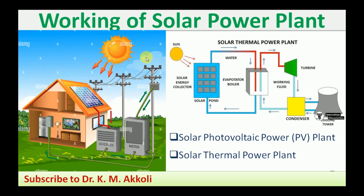We will discuss the working of the solar power plant and also solar energy conversion. The solar radiation coming from the sun reaches the earth's surface in the form of rays or photons, which may be called radiation in the form of electromagnetic waves. The energy we feel as heat and light is what we call solar energy.